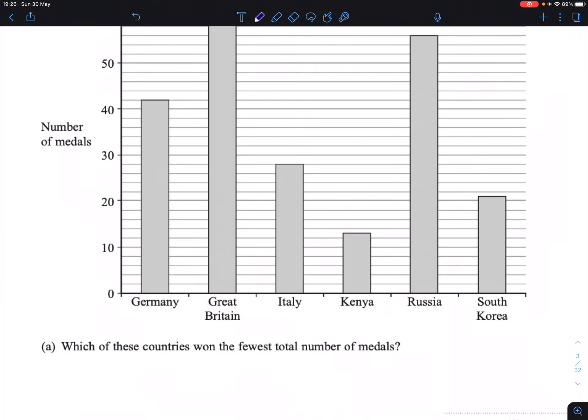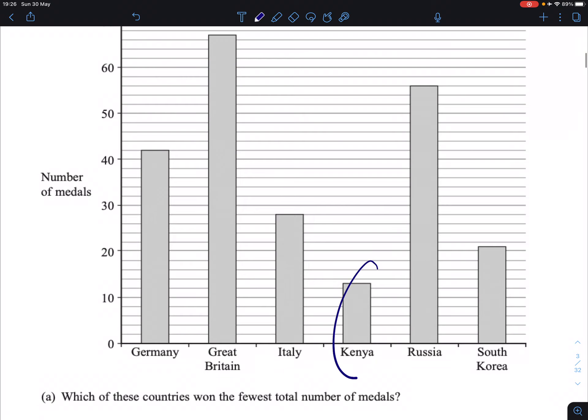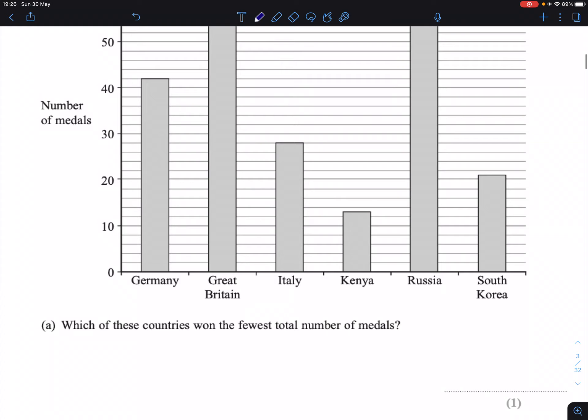Which of these countries won the fewest total number of medals? The smallest bar in this case, or the bar with the least frequency, the least height, was Kenya. So Kenya is our answer to part A.